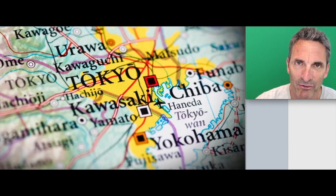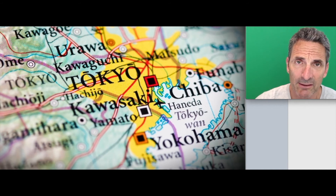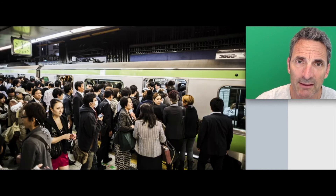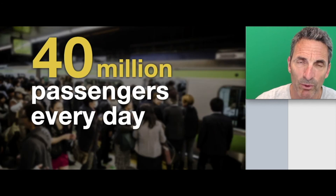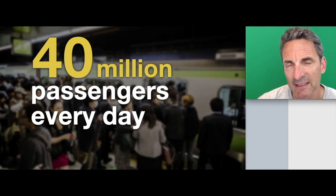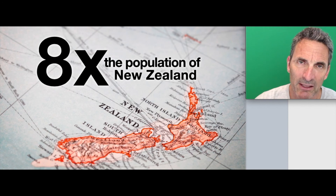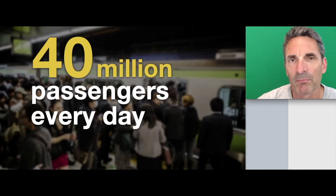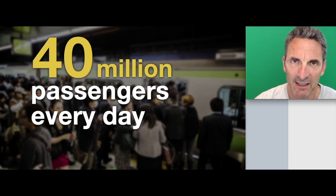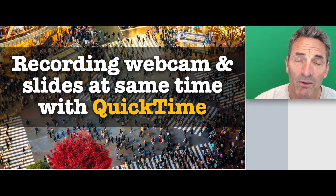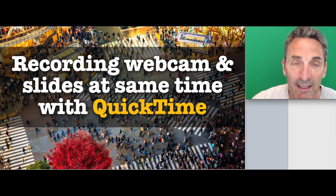So how many passengers in the greater Tokyo area, including Saitama and Yokohama? That number actually is 40 million — 40 million passengers a day — which is about eight times the population of the entire country of New Zealand. So yeah, 40 million passengers a day is a lot.